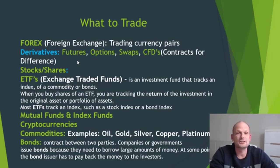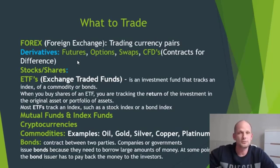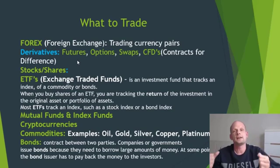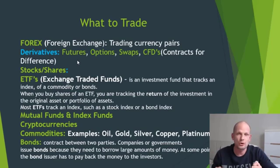You can have contracts for differences on pretty much all assets. For example, if you are trading Bitcoin CFD or Bitcoin futures, you are not actually trading the real asset — you are not buying that Bitcoin. You are only trading the change in price: if the price goes up and you are long, you make money; if the price goes down and you are short, you make money. Similarly, with CFDs you can trade companies like Apple or Google, but you don't actually own shares of that company — you are just trading the difference in price.